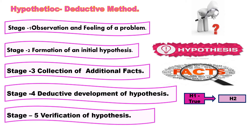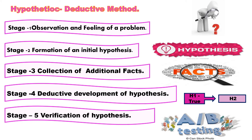The last stage is the verification of the deduced consequences. The hypothesis is tested by appeal to facts. If the deduced consequences occur, it is said to be confirmed; if they do not occur, it is said to be disconfirmed. A hypothesis may be verified either by observation of facts or by conducting an experiment. Whenever experiment is possible, it is preferred to simple observation. If the hypothesis is confirmed, it is accepted as the final solution to the problem.